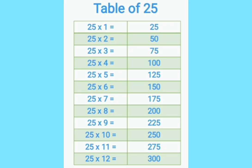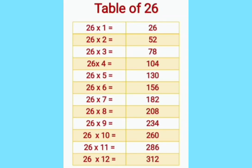25 twelves are 300. 26 ones are 26. 26 twos are 52. 26 threes are 78. 26 fours are 104. 26 fives are 130. 26 sixes are 156. 26 sevens are 182. 26 eights are 208. 26 nines are 234. 26 tens are 260. 26 elevens are 286. 26 twelves are 312.